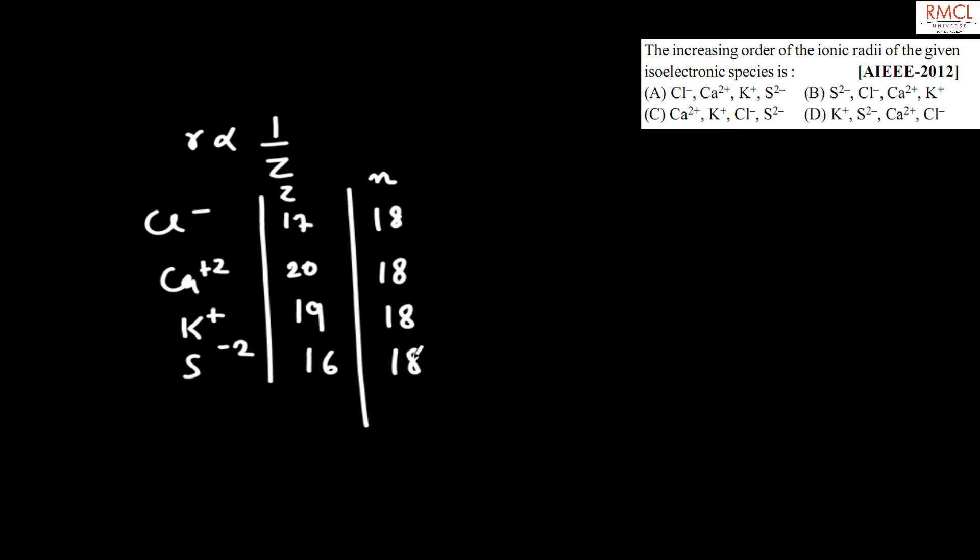So the correct answer for this question is S minus 2 has the highest ionic radii, next is Cl minus, then K plus, and the minimum...